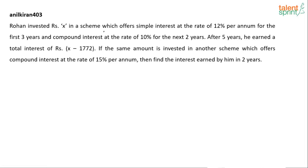Rohan invested rupees x in a scheme which offers simple interest at the rate of 12% per annum for the first three years and compound interest at the rate of 10% per annum for the next two years. After five years he earned a total interest of rupees x minus 1772. If the same amount is invested in another scheme which offers compound interest at the rate of 15% per annum, find the interest earned by him in two years.